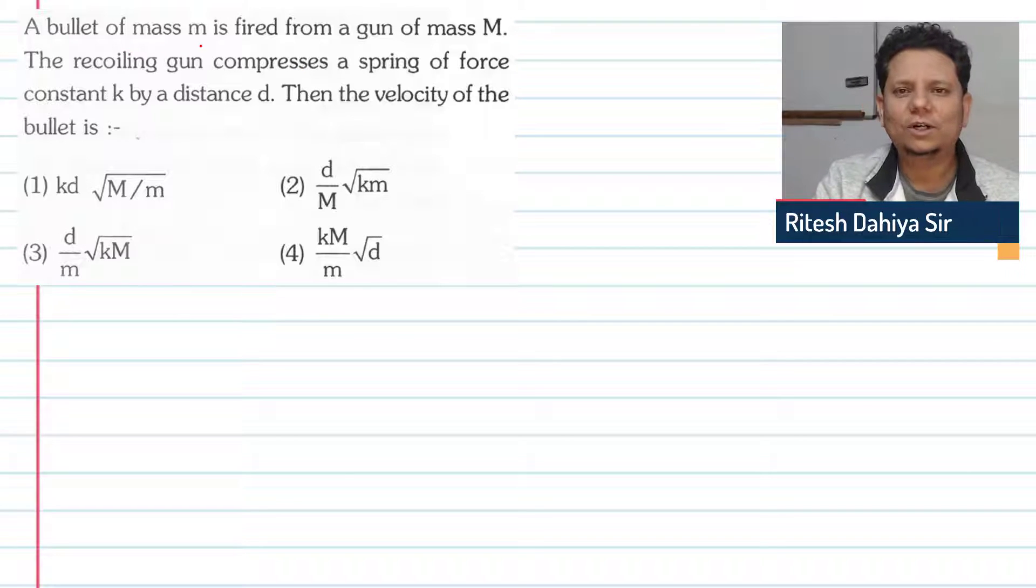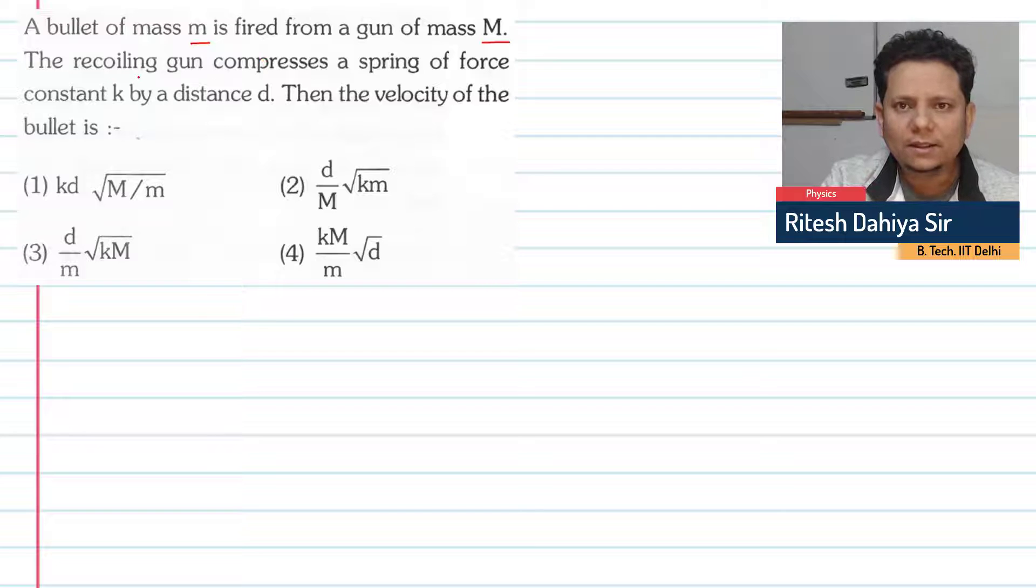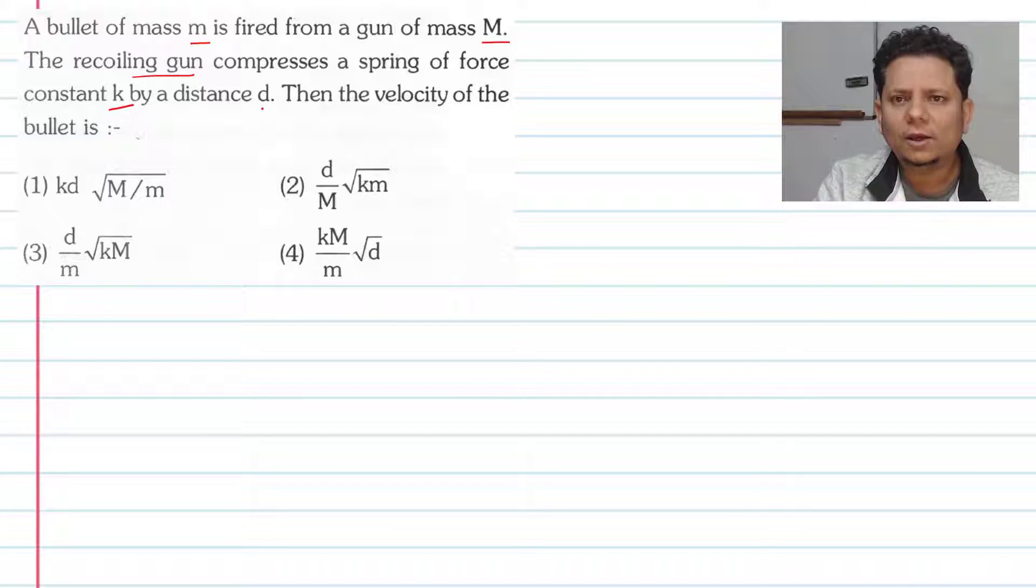Next question. Question says a bullet of mass small m is fired from a gun of mass capital M. The recoiling gun compresses a spring of force constant k by a distance d. Then velocity of the bullet what is going to be?